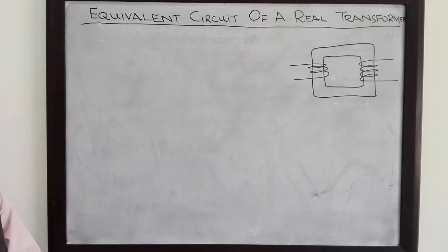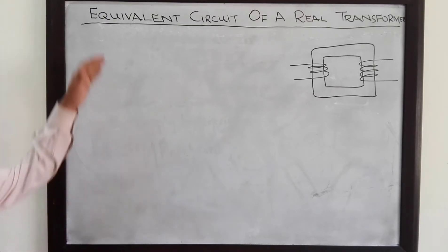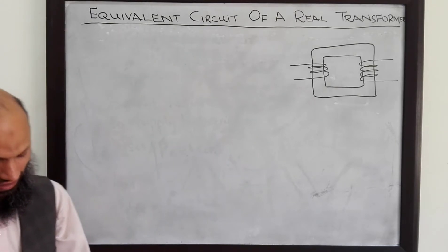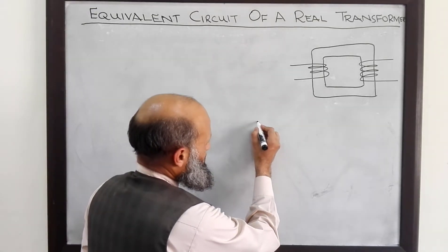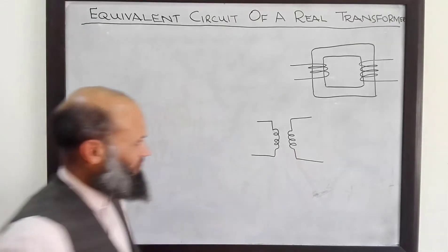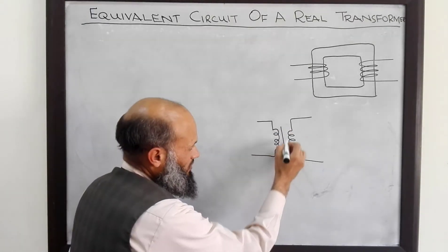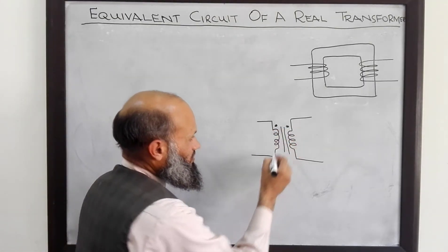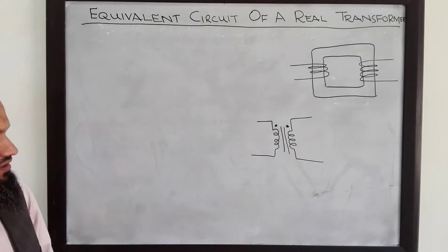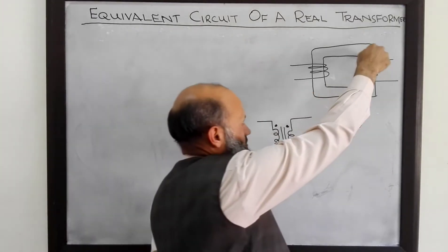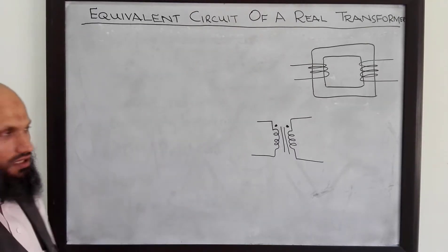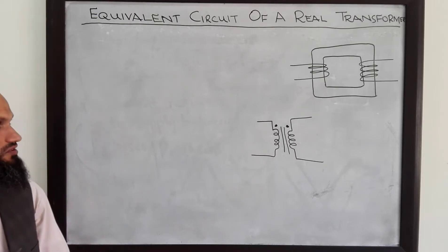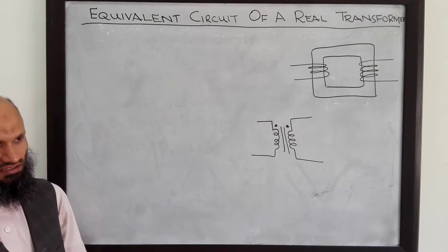In today's lecture we shall learn how to obtain the equivalent electrical circuit of a real transformer. An ideal transformer is represented by a symbol with primary winding, secondary winding, two lines to indicate the core, and dot notation which indicates the sense of the winding — whether it is wound clockwise or counterclockwise. We also remember the differences between a real transformer and ideal transformer discussed in the last lecture.